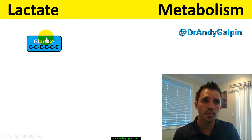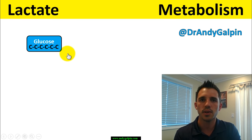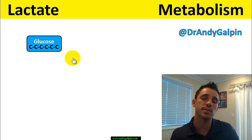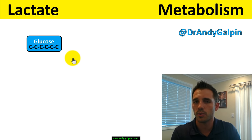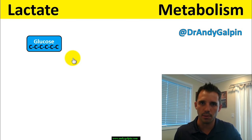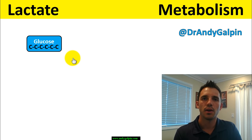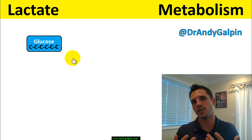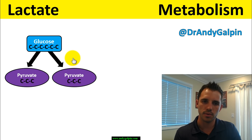As you can see from our cartoon, there are six carbons all on a chain. When we go through the process of anaerobic glycolysis — or simply glycolysis — lysis means to break apart and glyco refers to glucose. Glycolysis simply means we split this six-carbon molecule into two three-carbon molecules.